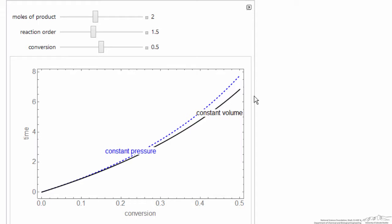So here's the interactive simulation. You'll notice there is a difference. The constant pressure reactor requires more time in the case when one mole reactant goes to two moles of products.